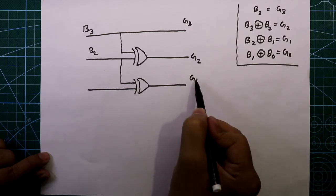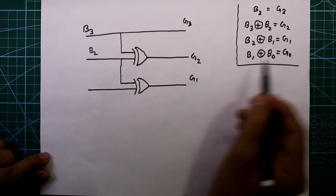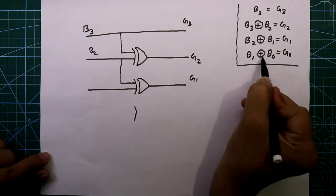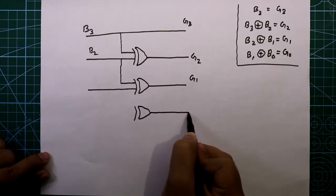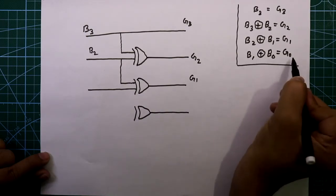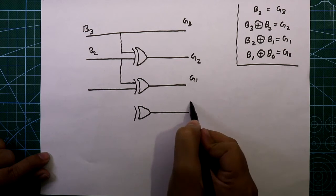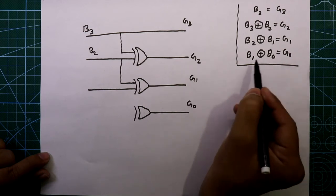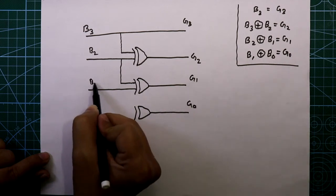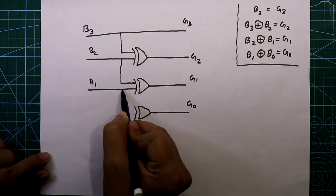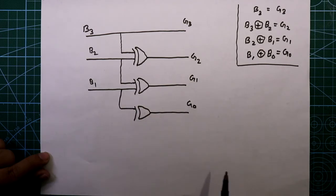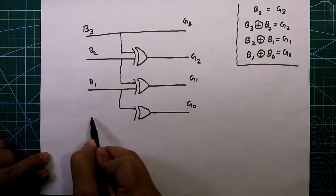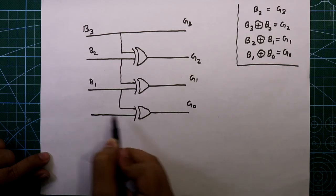This gives us G1. For G0 we need another XOR gate — G0 = B1 XOR B0. Connect B1 to one input and B0 to the other input.